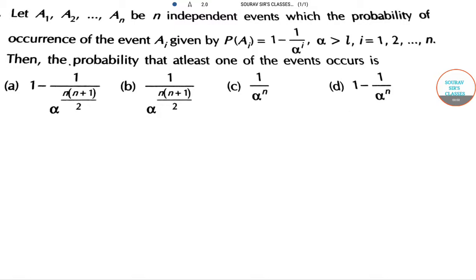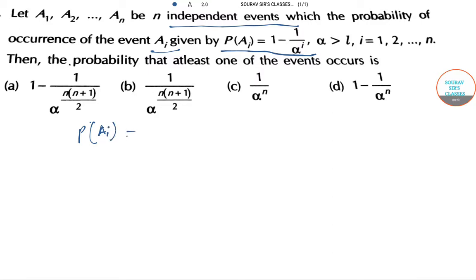Let A1, A2, ... up to An be n independent events, where the probability of occurrence of event Ai is given by P(Ai) = 1 minus 1 by alpha to the power i, where alpha is greater than 1 and i ranges from 1 to n. The question asks: what is the probability that at least one of the events occurs?